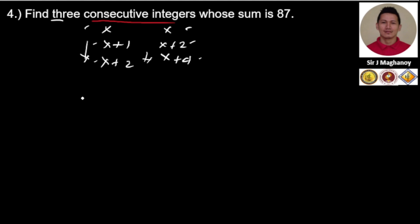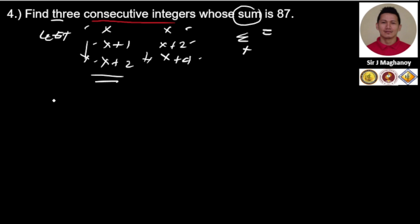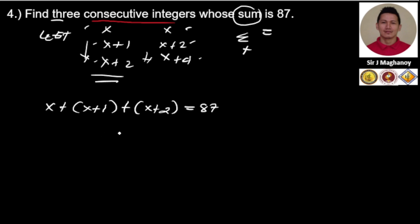So let's use these values for our numbers. The sum equals 87 — remember, 'sum' means addition and 'is' becomes the equal sign. Therefore, we let our three consecutive integers be x, x plus one, and x plus two. Writing our equation: x plus (x plus one) plus (x plus two) is equal to 87.